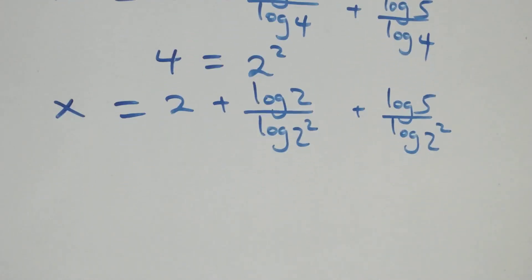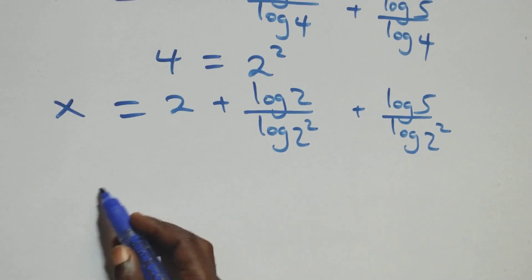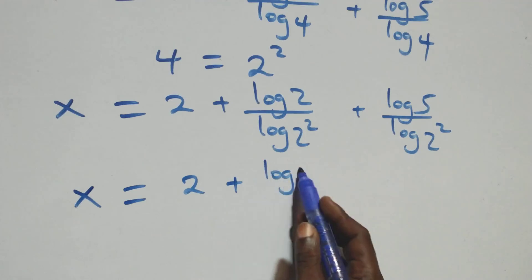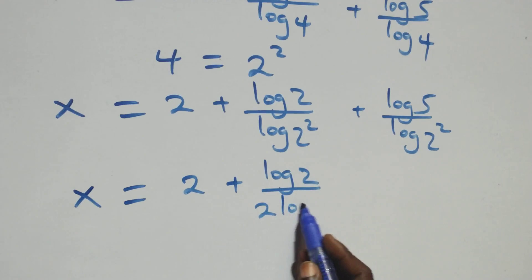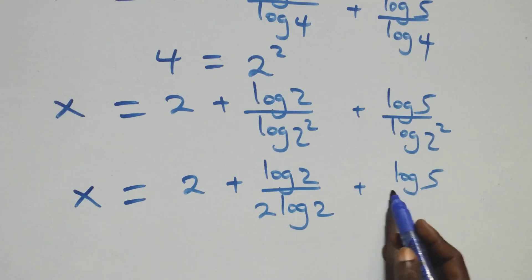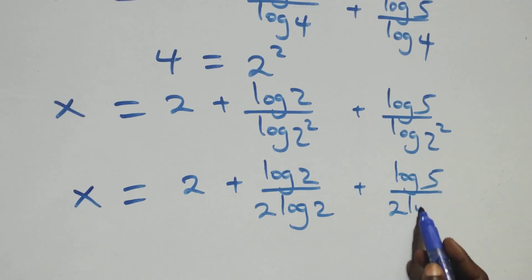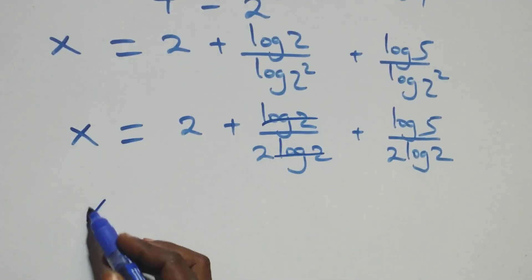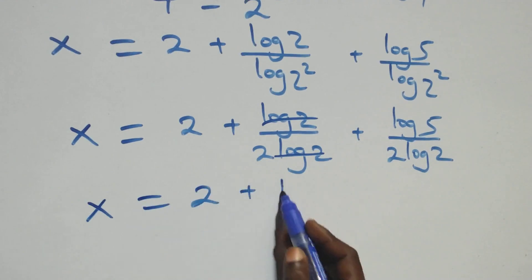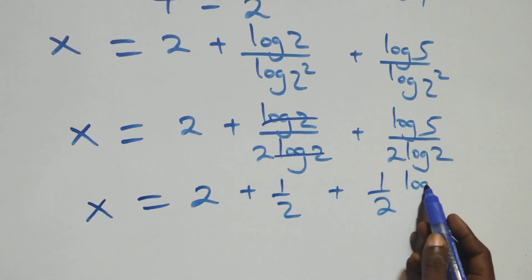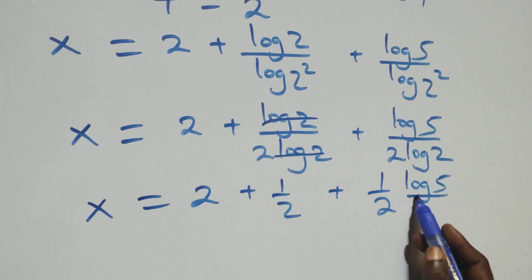We apply the power rule of logarithm: the 2 from the squared comes down, giving x equals 1 plus log 2 over 2 log 2 plus log 5 over 2 log 2. The log 2 terms cancel in the first fraction, leaving 1 over 2, so x equals 1 plus 1/2 plus (1/2)(log 5 over log 2).